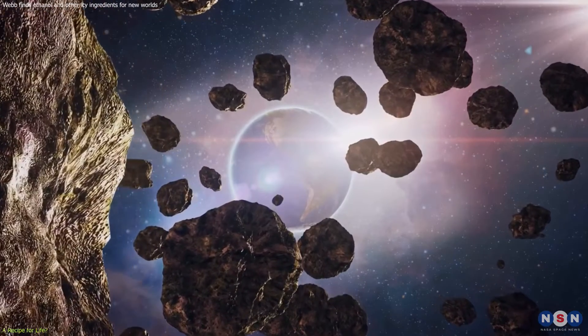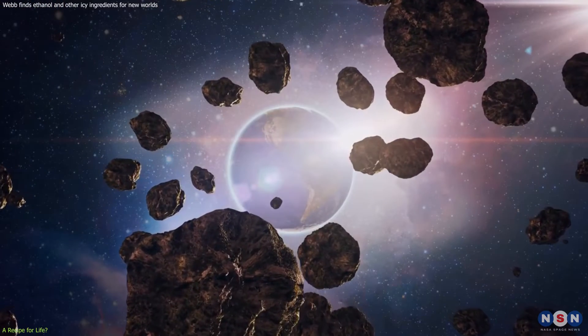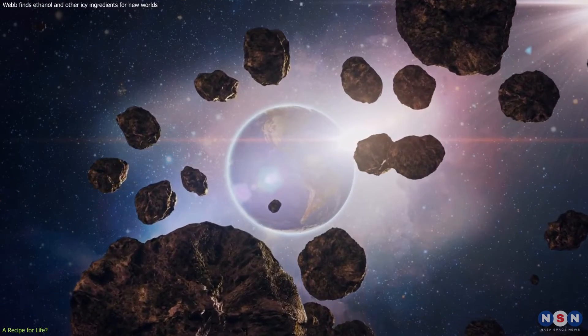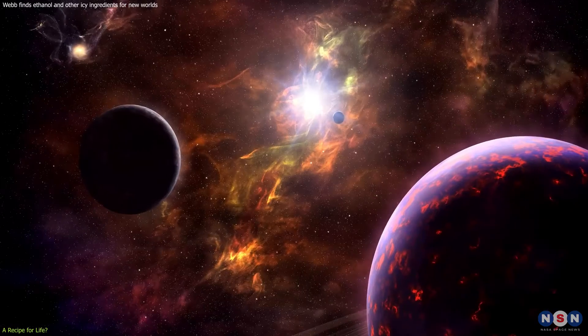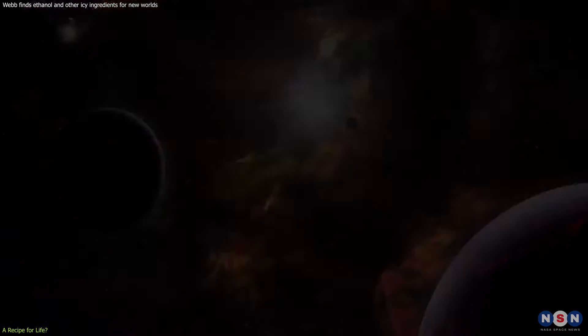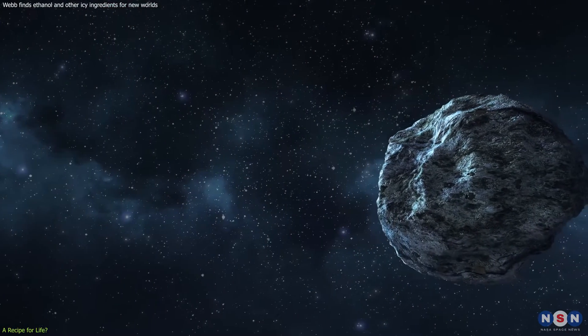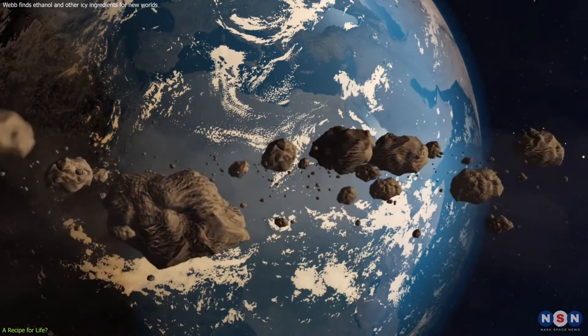This raises the tantalizing possibility that life, or at least the conditions necessary for life, could be a common feature of planetary systems throughout the galaxy. If the ingredients for life are readily available and can be transported to forming planets, then the emergence of life might be a natural outcome of planetary formation.